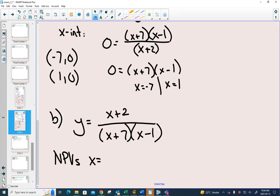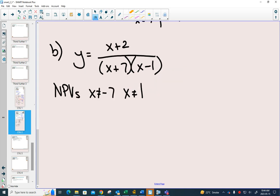We start looking at our non-permissible values. Our non-permissible values, x can't equal now negative 7 and x can't equal 1. Nothing cancels, so those will be vertical asymptotes at x equals negative 7 and x equals 1.